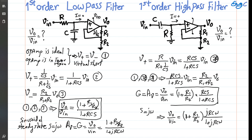Intuitively, at high enough frequency the impedance of the capacitor is zero, so it acts as a short circuit. Vin then connects directly to the positive terminal of the op-amp. Due to the virtual short, the negative terminal equals Vin, and therefore Vout equals (1 plus R1/R2) times Vin. At very low frequency or DC, the capacitor is an open circuit, and nothing from the input reaches the output.